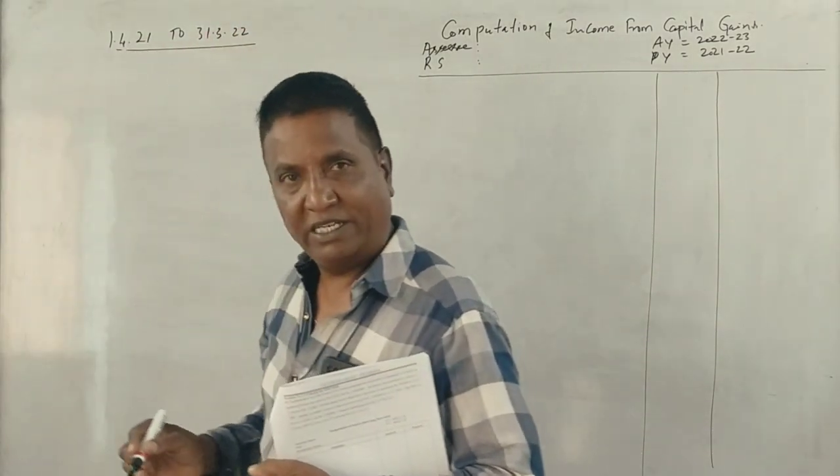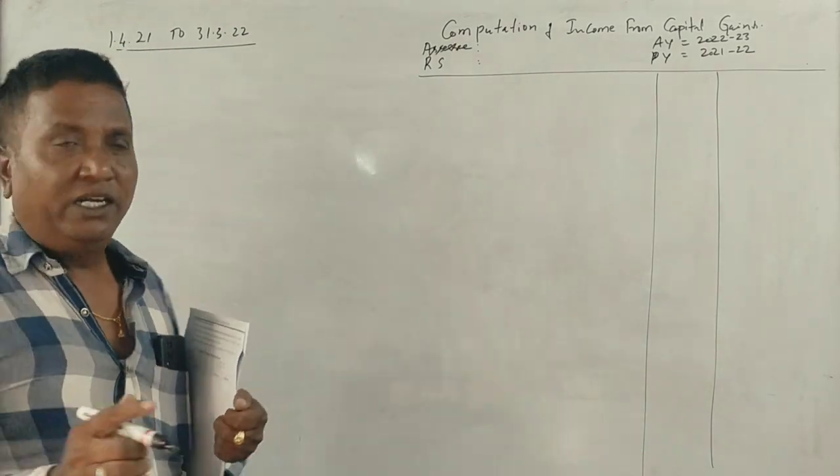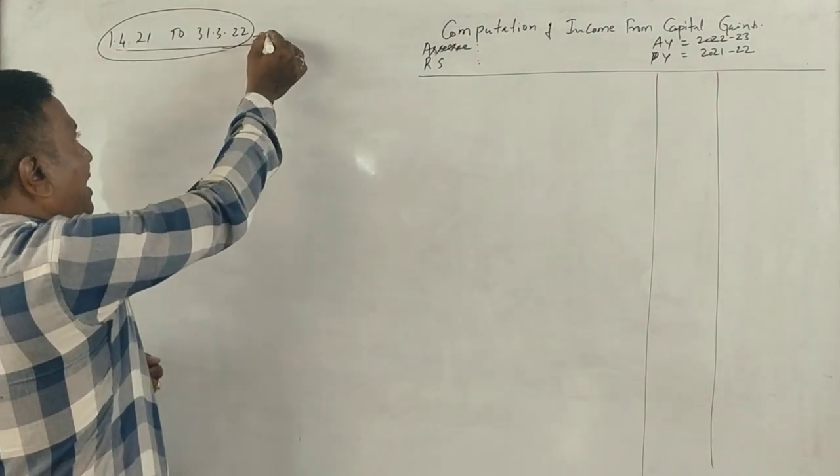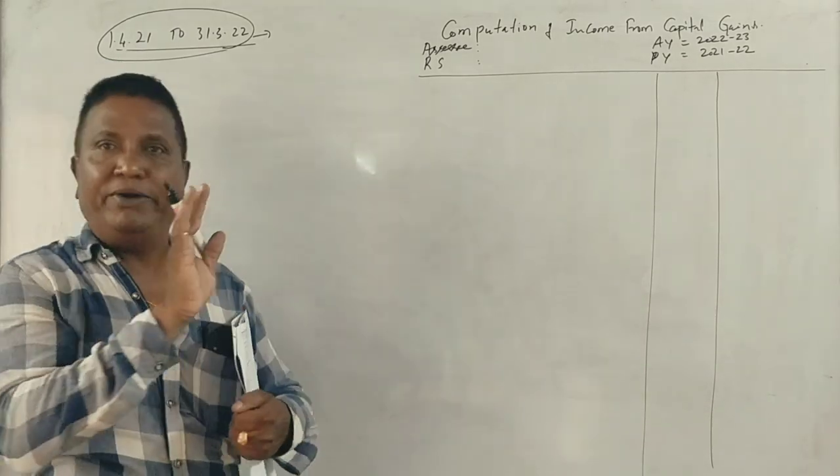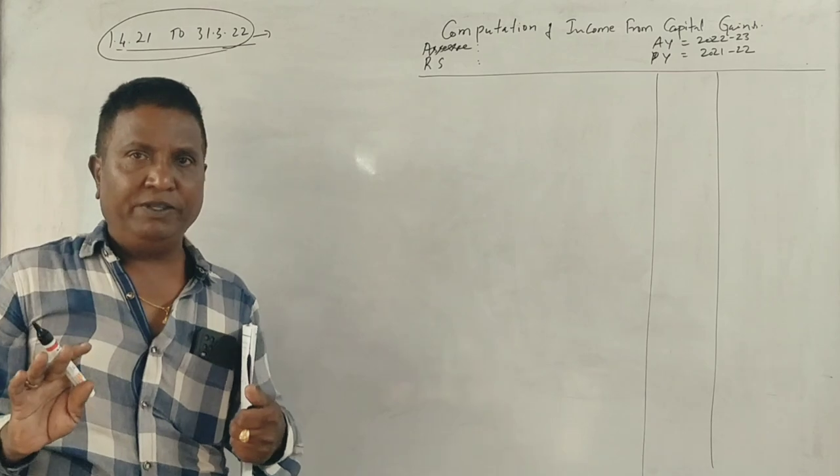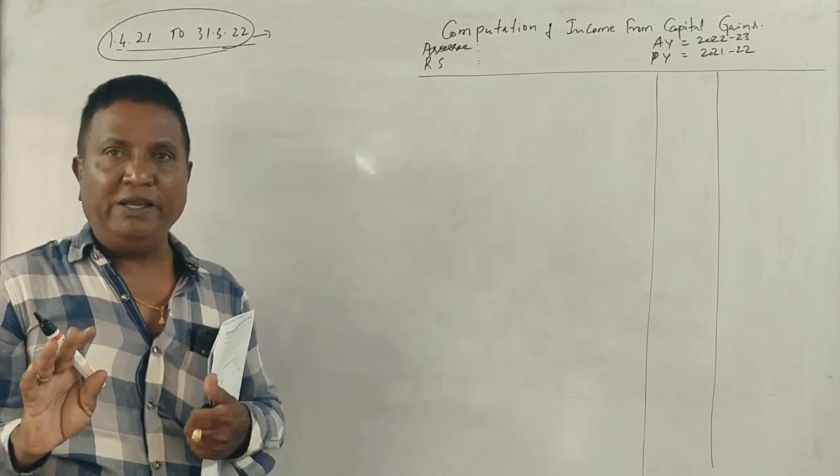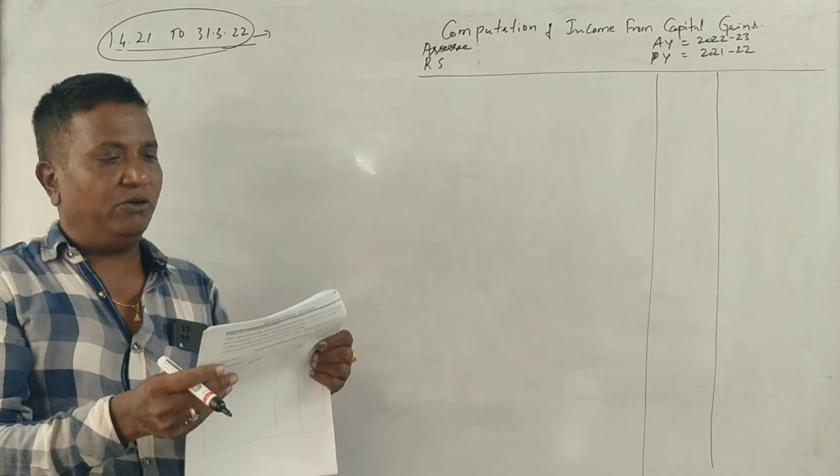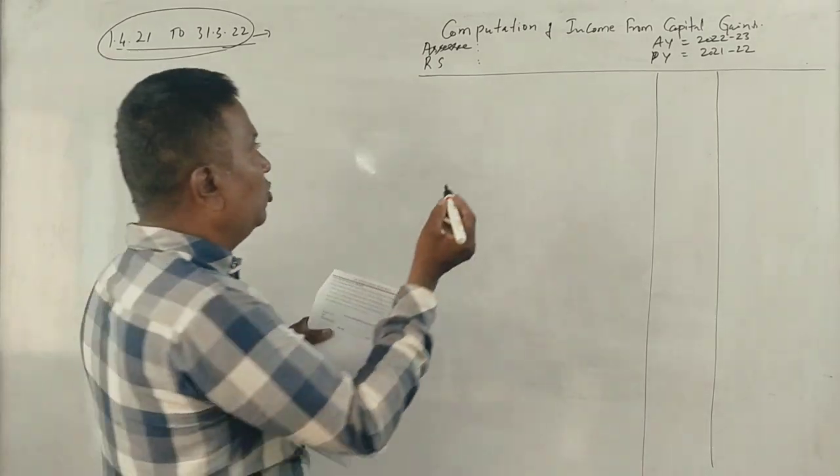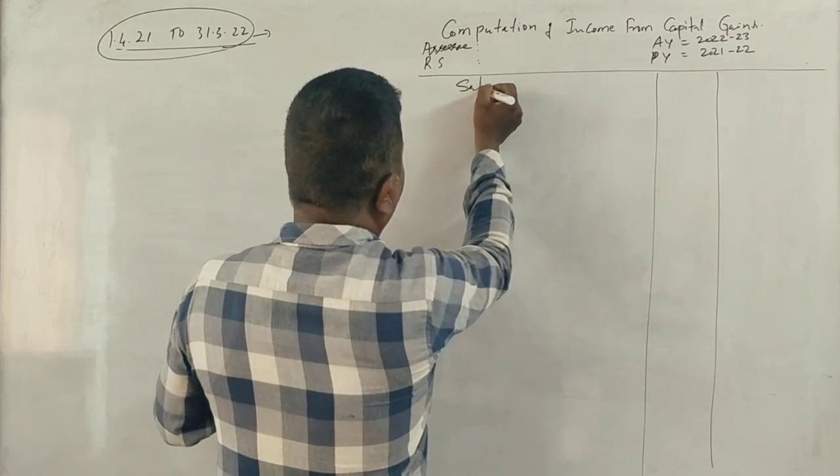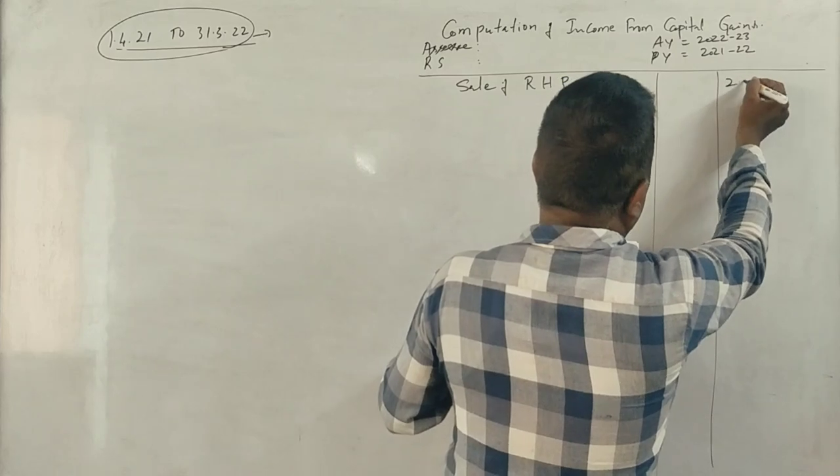The sale was in the previous year ending 31st March 2022. The sale money received was 20 lakh rupees. So the sale of this residential house property is 20 lakh rupees.